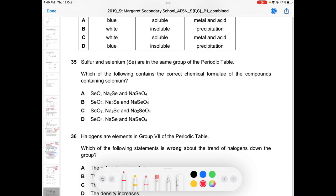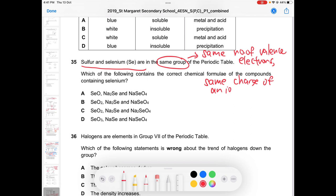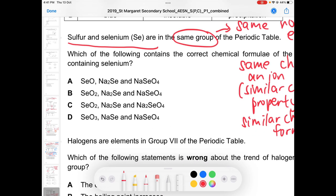Question 35, answer is C. Let's take a look. They tell you that they're in the same group. Same group means same number of valence electrons. We'll form same charge of an ion. Similar chemical property. And then it also means similar chemical formula.